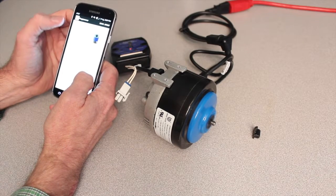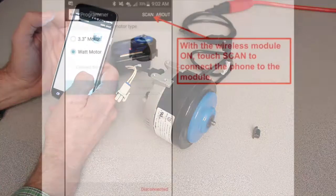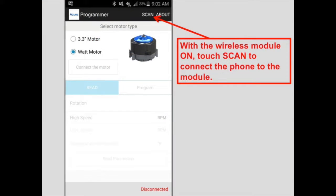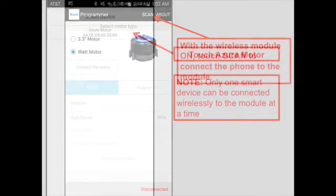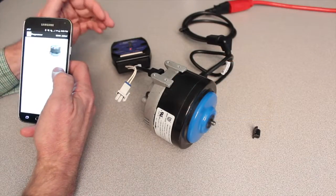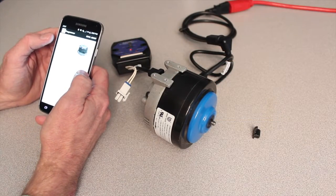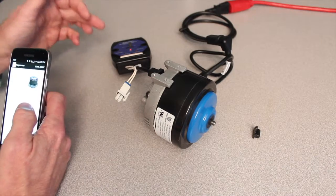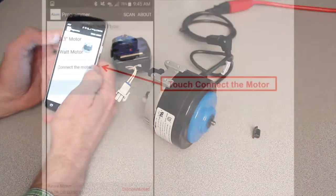We can select between the 3-3 motor or the Watt motor. We'll pick the Watt motor. And now I'm going to scan with my phone. It's found the module over here. I'll touch that. Now my phone is connected to the Bluetooth module. Now I need to connect the module to the motor by touching connect the motor.